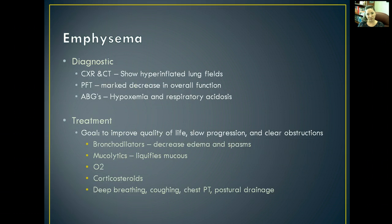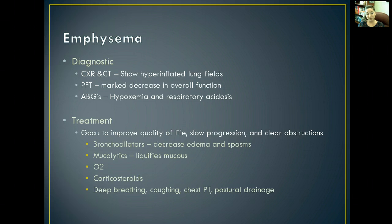To diagnose emphysema, a chest x-ray and CT scan will show hyperinflated lung fields. Pulmonary function tests will show a decrease in the overall function of the lungs. ABGs will show hypoxemia and respiratory acidosis due to increased CO2 levels. The goal of treatment is to improve quality of life — we can't treat or cure the disease, so we aim to slow progression, clear any obstructions, and increase quality of life as much as we can.